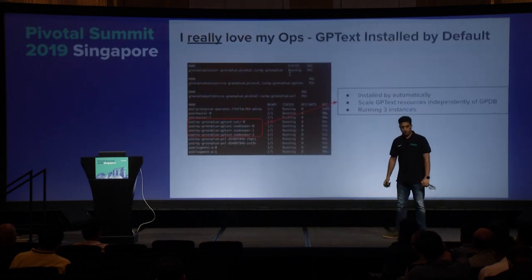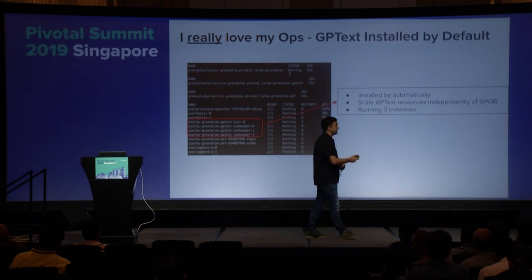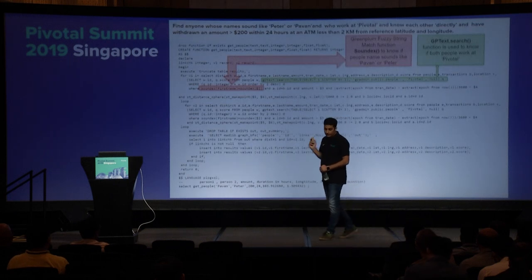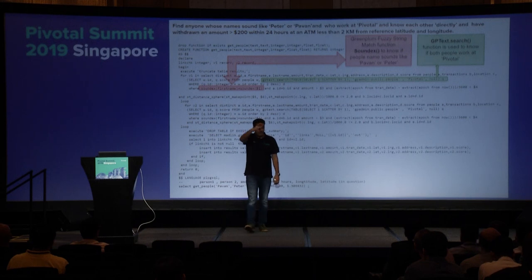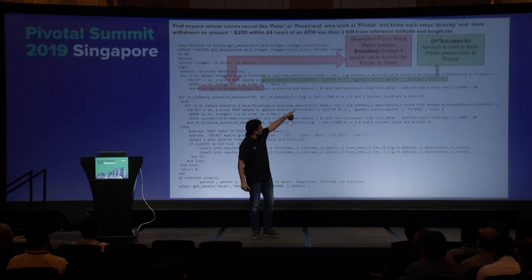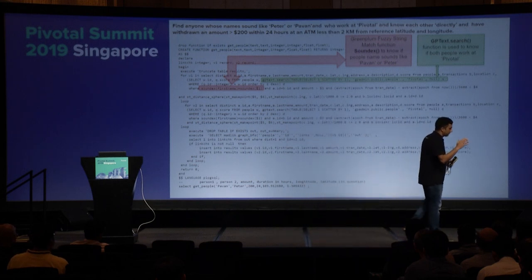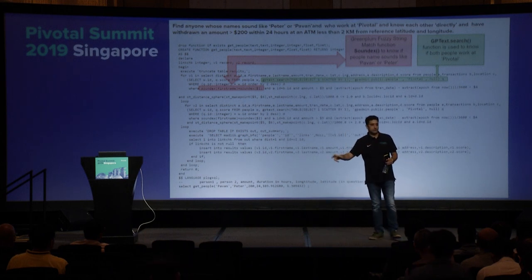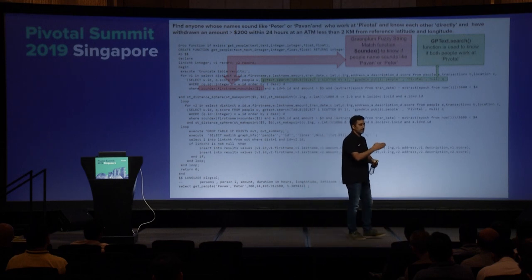My ops team has also already created an extension for Solr. It's called GP Text — that is the Pivotal name for Greenplum integration with Solr. Here is the source code. I'm using a SoundEx function for Pawan and Peter. I'm also using a GP Text function. The text search converts it into a native Solr request and runs in parallel. Solr is running within each pod that has my Greenplum processor running — Solr and my data platform are running in the same pod, which is about data affinity and index affinity.